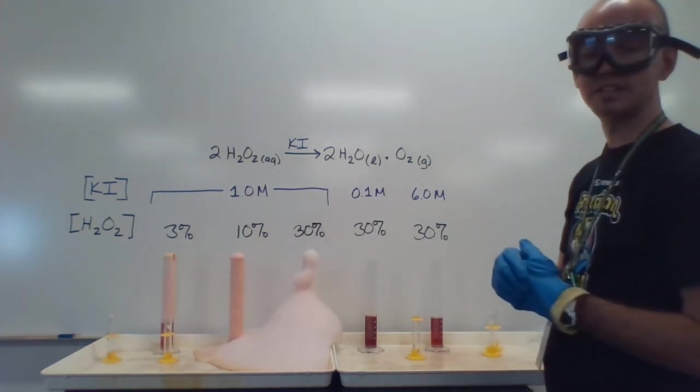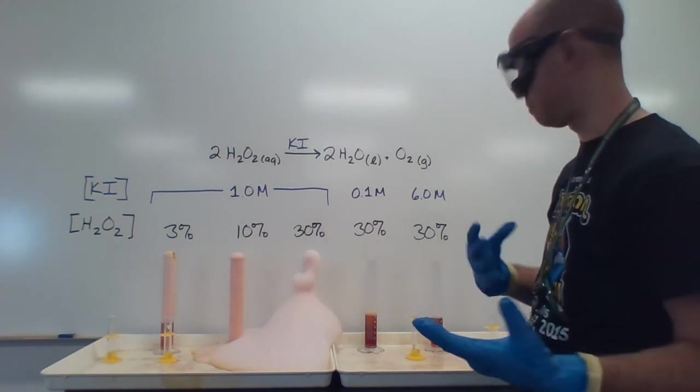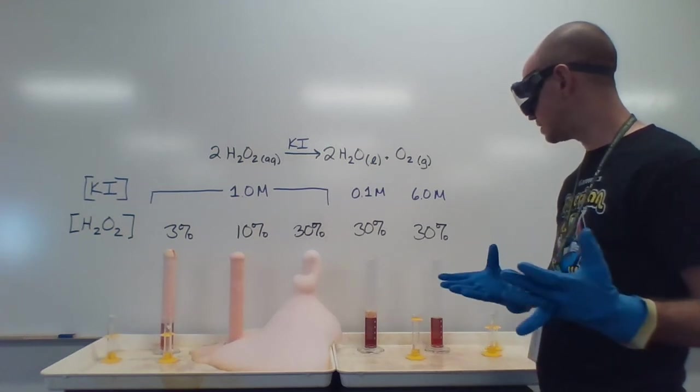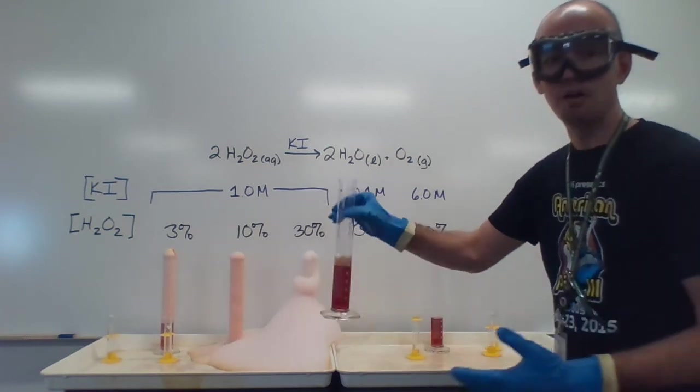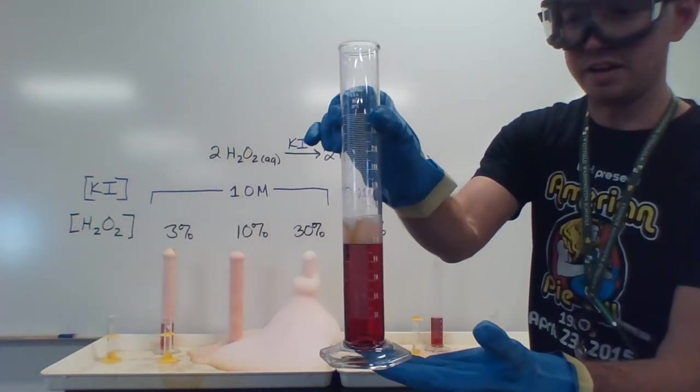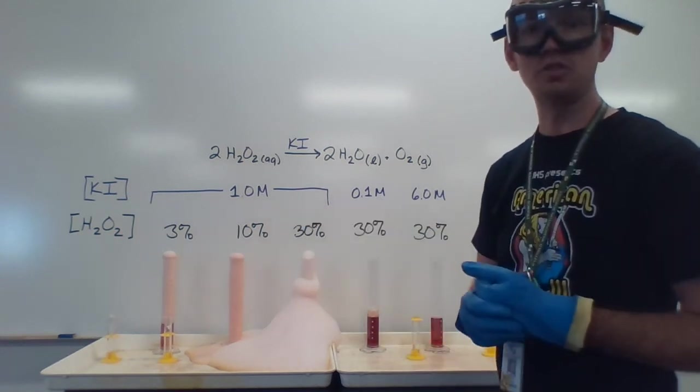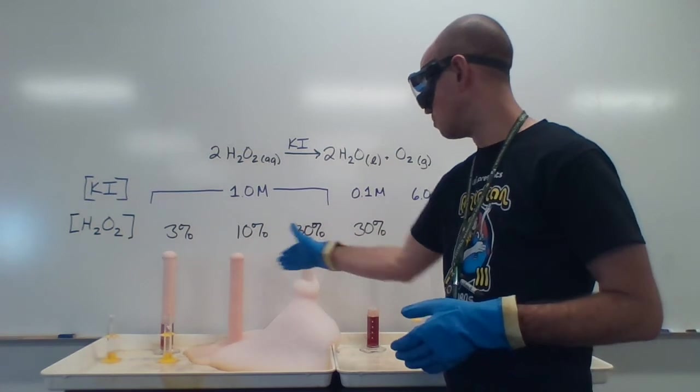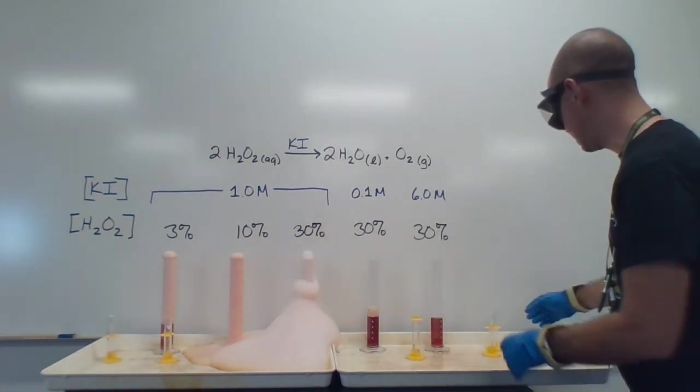In this one, I still have that 30%, but I'm using 10 times less in terms of the amount of potassium iodide catalyst. And as we look at it, it is a lot slower. It is kind of slowly bubbling up. I'll bring it closer because it's not going to foam over at the beginning. And we notice that that reaction is really a lot closer to the one that we started with, more of a slow and steady as opposed to the more intense overflowing, making a mess ones.